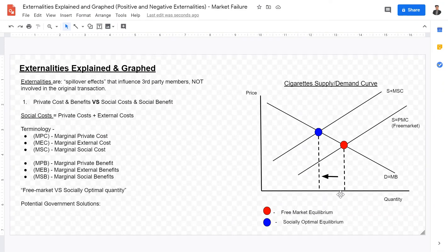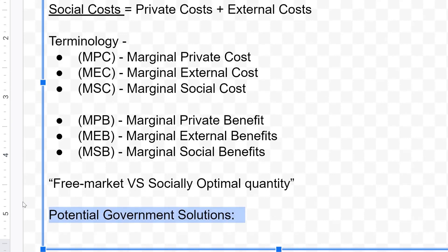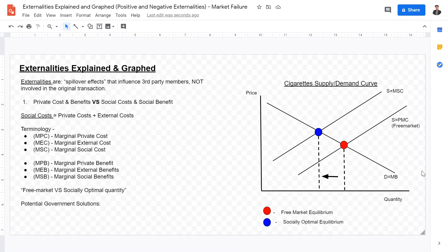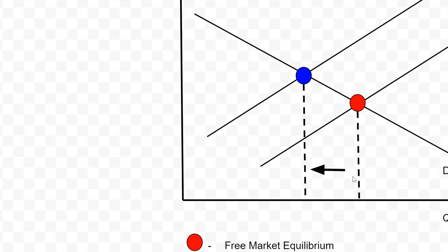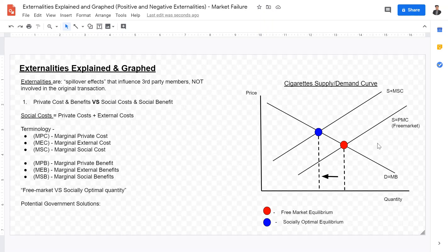This is where market failure occurs, because the market fails to provide socially optimum quantities. Examining potential government solutions — one solution is having a tax. If you have a tax, the entire supply curve shifts from the free market equilibrium to the socially optimum equilibrium, and market failure is therefore curbed. So this has been the definition and explanation of externalities — positive and negative — with an example of how governments could solve this externality and a graph of negative externalities. I hope this video is helpful and I hope to see you in the next one. Goodbye.